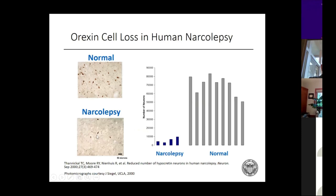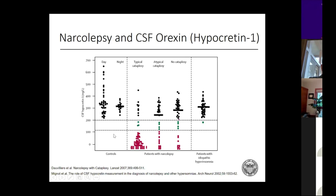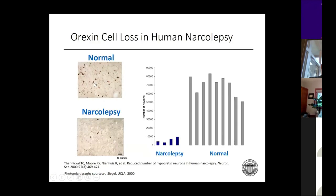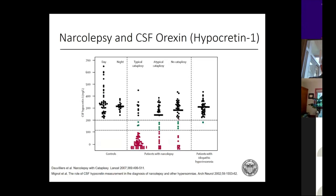For type 1 narcolepsy, it's essentially destruction of orexin-producing cells in the dorsolateral hypothalamus. Here you can see stained cells in a normal individual versus just a handful remaining in narcolepsy — the disease expresses itself once around 90% of these cells are destroyed, so unfortunately the horse is out of the barn by the time the disease occurs. If you check orexin/hypocretin-1 in the CSF — which can be done as a send-out test to Mayo — less than 110 nanograms per liter is diagnostic. Even in people with typical cataplexy there'll be some normals, but mostly low CSF hypocretin. As you go to atypical cataplexy there's more of a mixture; without cataplexy, most individuals will have normal hypocretin levels.